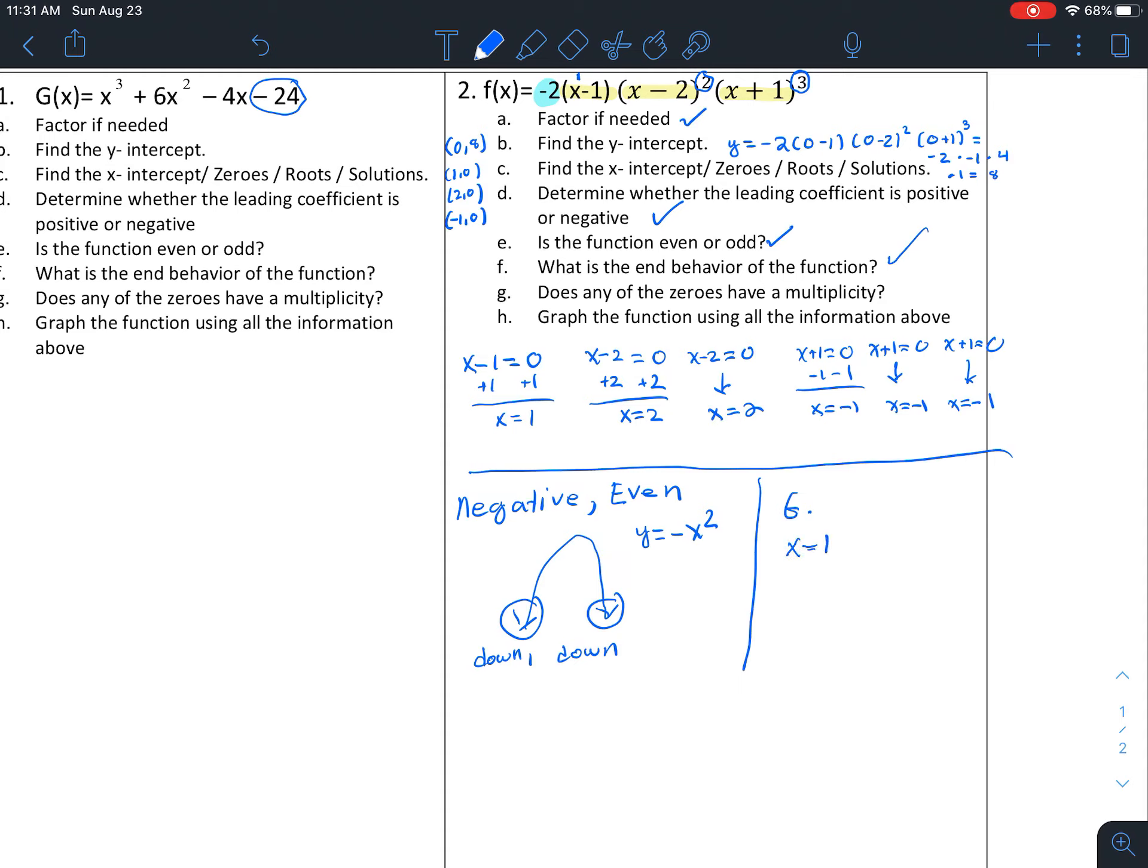And then G says, does any of the zeros have a multiplicity? And this is definitely a yes. So when we look at x equals 1, we say that has a multiplicity of 1. So nothing special happens there. You go through the point. But x equals 2, we have a multiplicity of 2, not because it's x equals 2, but because 2 happens twice. So there's going to be a bounce that happens at that point.